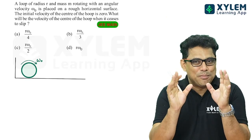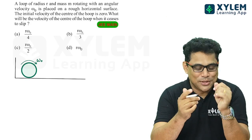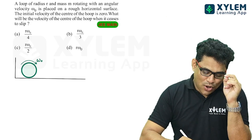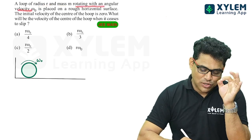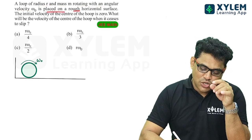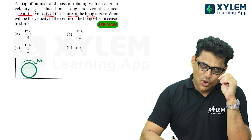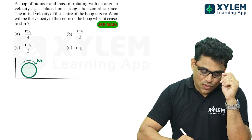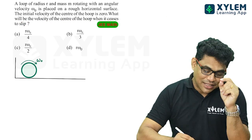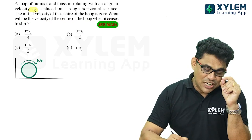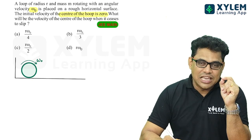Hi children. In our video, I will show you a previous JEE main question. A loop of radius r and mass m, rotating with angular velocity omega_0, is placed on a rough horizontal surface. The initial velocity of the center of the hoop is zero. What will be the velocity of the center of the hoop when it ceases to slip? The initial angular speed is omega_0 and the center of the hoop's linear velocity is zero.